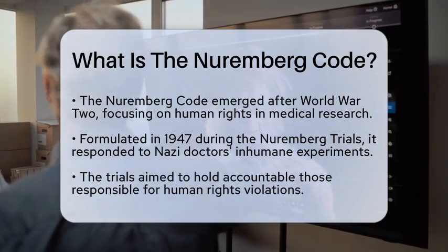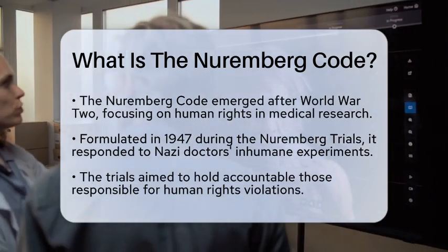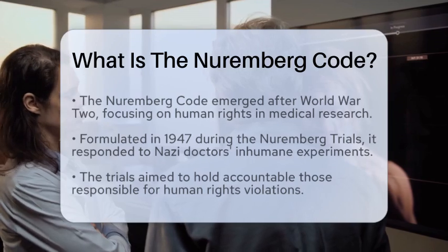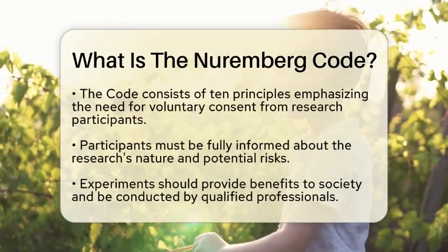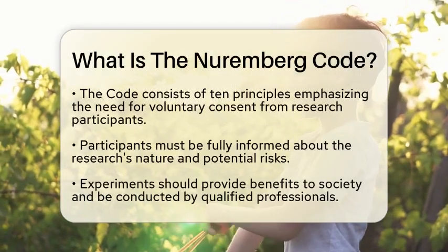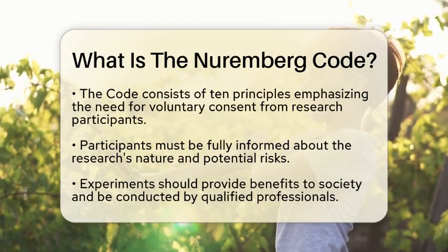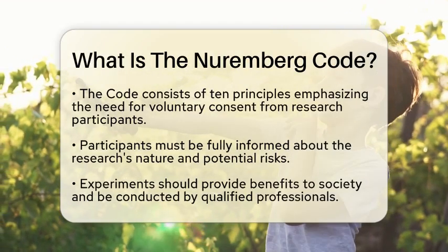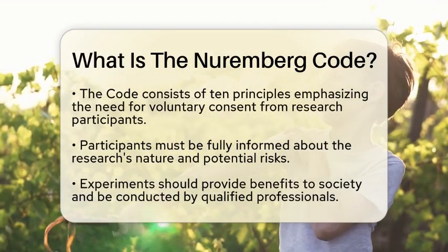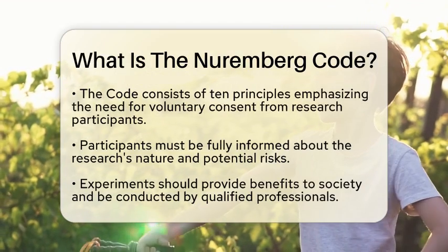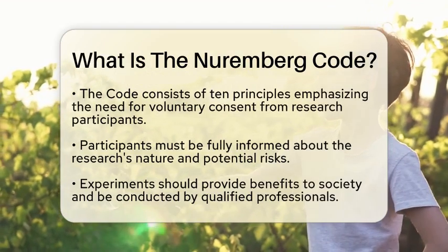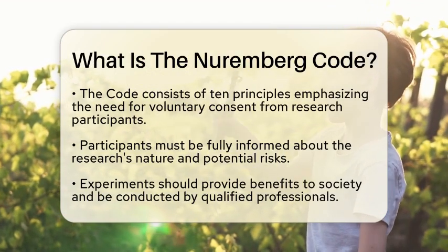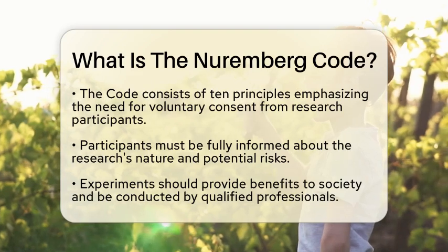Formulated in 1947 during the Nuremberg Trials, the Nuremberg Code was established in response to the atrocities committed by Nazi doctors who conducted inhumane experiments on prisoners. The trials aimed to hold these individuals accountable and to prevent such violations of human rights from occurring again.